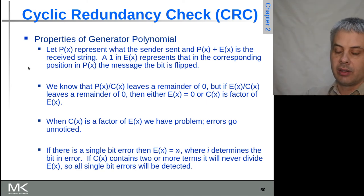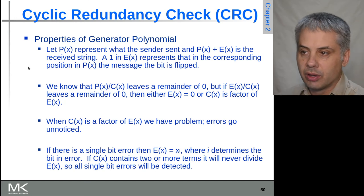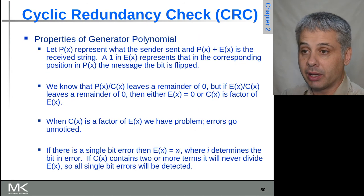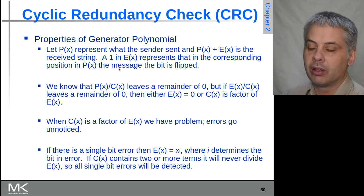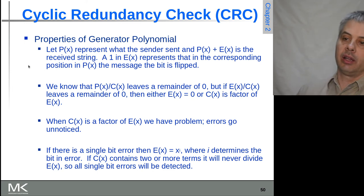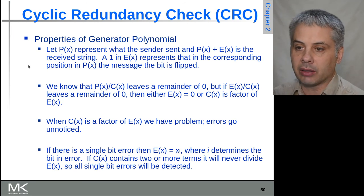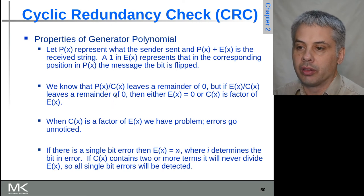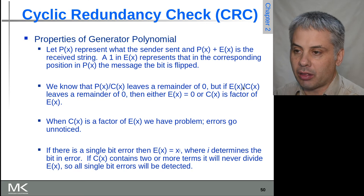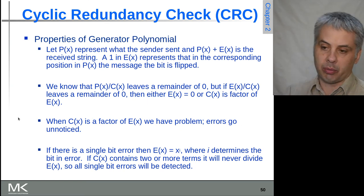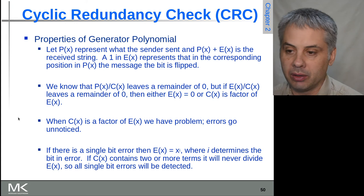When we send the message with the CRC appended and receive it at the other end, every 1 in the error term e(x) means the corresponding position in the message has been flipped, but this is all computed through modulo 2, compacted over the entire length of the message. The main thing to watch out for is that if c(x) is a factor of e(x), it is possible for errors to not be correctly detected.